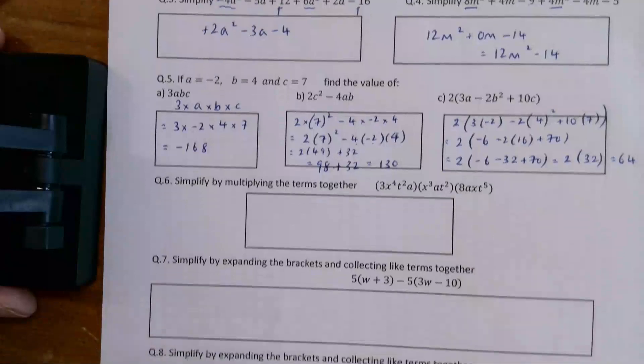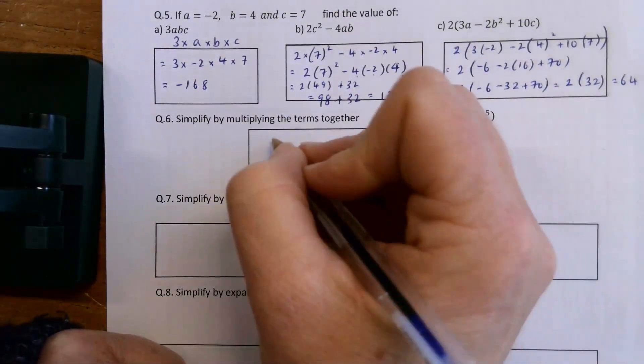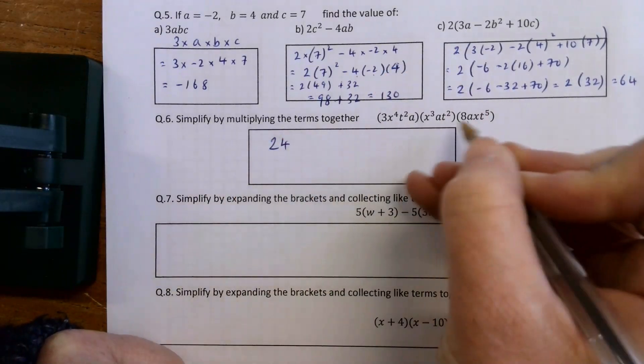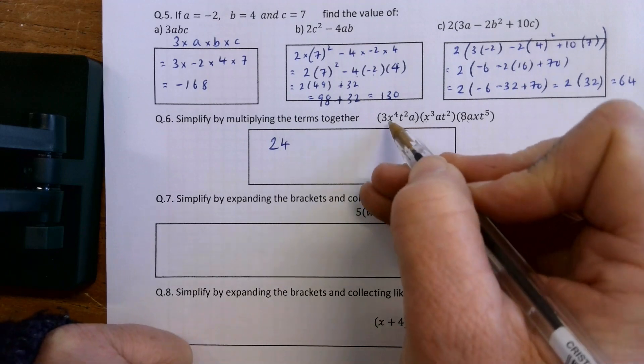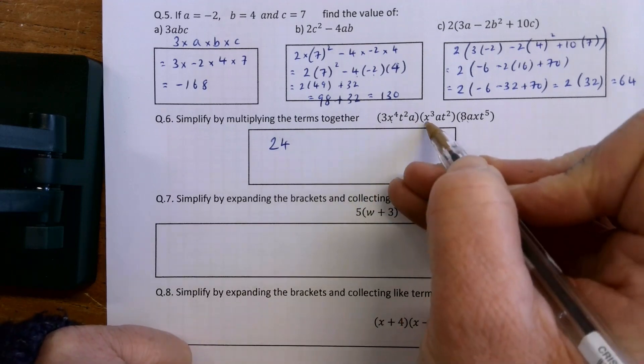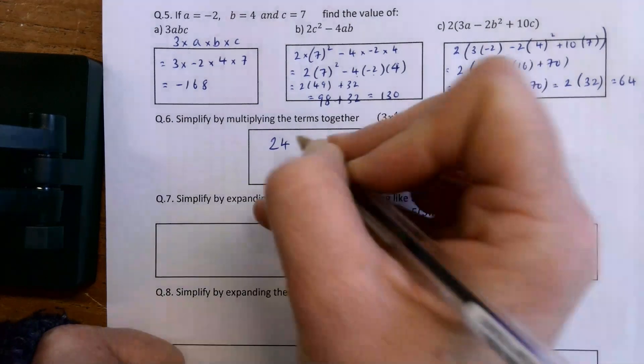Simplify by multiplying the terms together. 3 by 8, so I multiply the big numbers together. 3 by 8 is 24, and there's no number in that for me to multiply by. x to the power 4 by x to the power 3 is x to the power of 7. So x to the power of 7 by x is x to the power of 8.